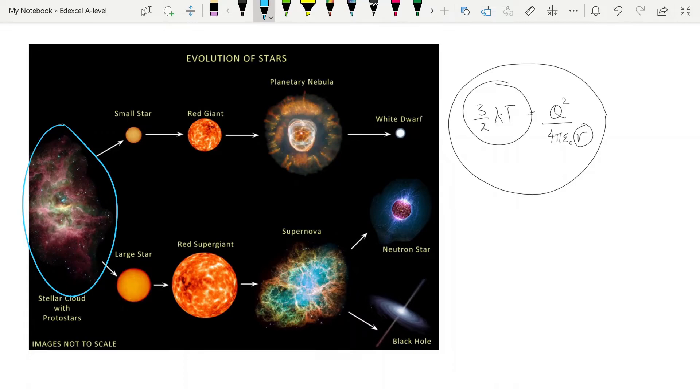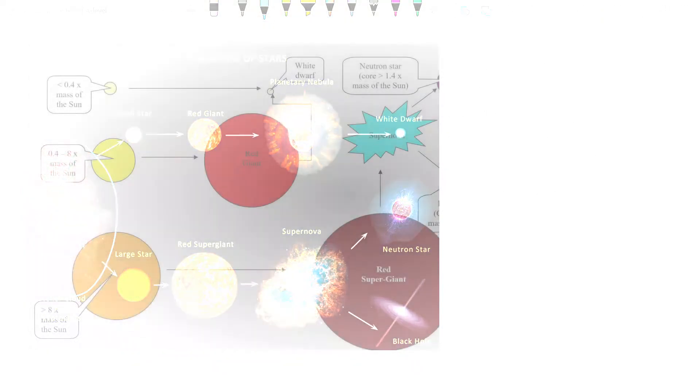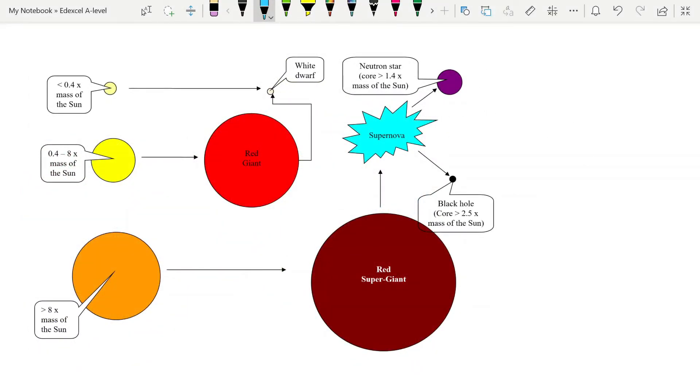What happens next with the life cycle depends upon the size of the star. This diagram summarizes it fairly nicely. If the star is less than about half the mass of the sun, once it has gone through its main sequence, its hydrogen fuel is being used up, it just straight turns into a white dwarf. It just collapses, you get gravitational collapse, and it becomes a white dwarf. If it's between 0.4 and 8 times the solar mass of the sun, it becomes a red giant and then turns into a white dwarf after that.